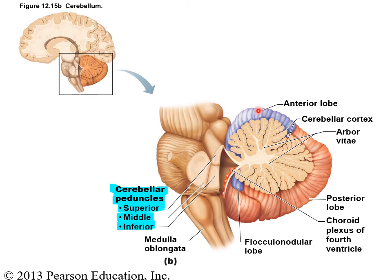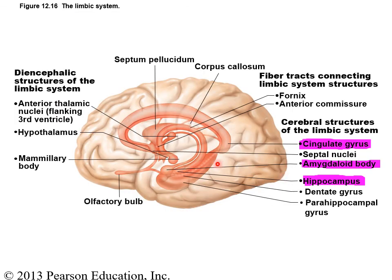Looking at the cerebellum, gray matter is on the outside and white matter is on the inside, forming a tree-like pattern called the arbor vitae, which means 'tree of life.' The cerebellar peduncles are the connections linking the cerebellum to the brain stem: the superior peduncle connects to the midbrain, the middle peduncle connects to the pons, and the inferior peduncle connects to the medulla oblongata. These serve as the relay between the cerebrum and the cerebellum.